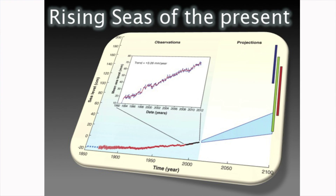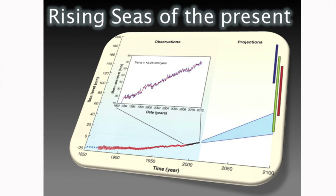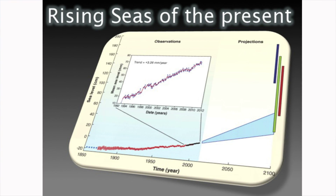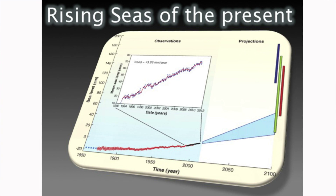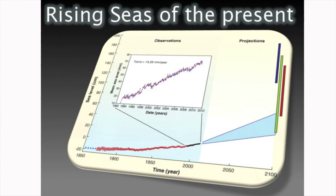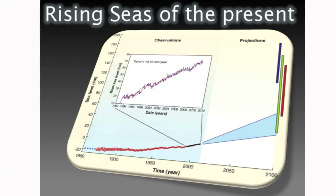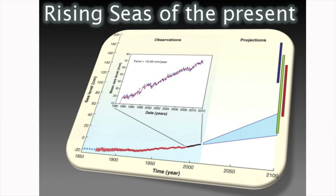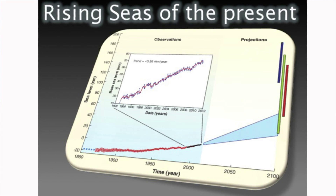In the insert, we have satellite-based measurements. Satellites that circumnavigate our Earth record the sea surface heights. They have shown, since records began in the early 1990s, that sea levels are now rising at rates of around 3 millimeters per year. So the next question is: what are the processes responsible for these changes in the present, and what will be responsible for the predictions of the future?